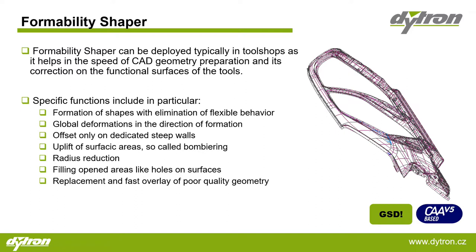Here you can see some of the key functionalities of the module. In particular, it covers formation of shapes with elimination of flexible behavior, global deformations in the direction of formation, and an offset only on dedicated steep walls. Another feature is an uplift of surfacing areas, so-called bomeering. There is also the possibility to reduce the radius, fill opened areas like whole surfaces with a single click, and a possibility of replacement and fast overlay of poor quality geometry.